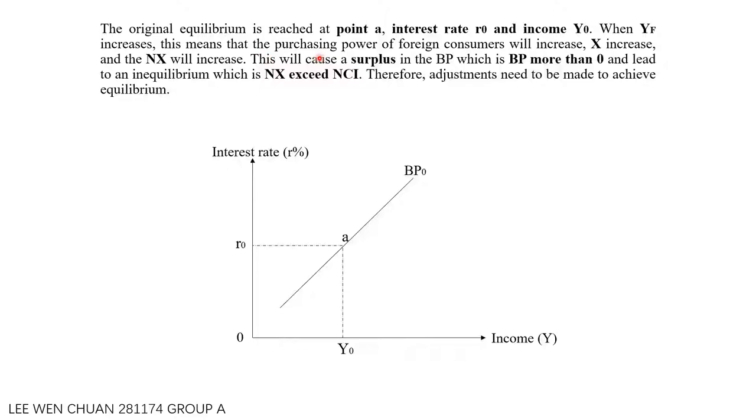When foreign income increases, this means that the purchasing power of foreign consumers will increase. Exports increase, and net exports will increase. This will cause a surplus in the BP, which is BP greater than zero, and lead to a disequilibrium where net exports exceed net capital inflow.